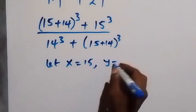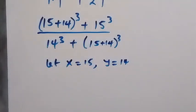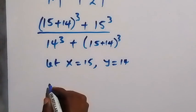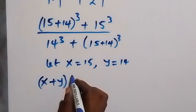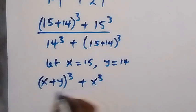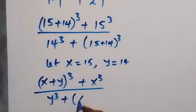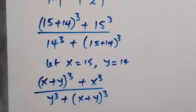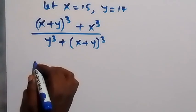Let x equal 15 and y equal 14. We can rewrite the expression in terms of x and y. We have (x plus y) everything raised to power 3, then plus x raised to power 3, over y raised to power 3, then plus (x plus y) raised to power 3.